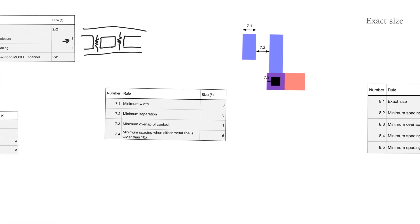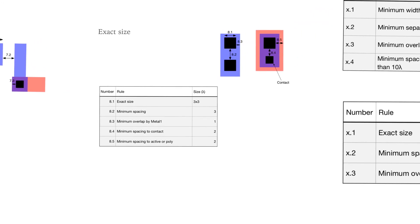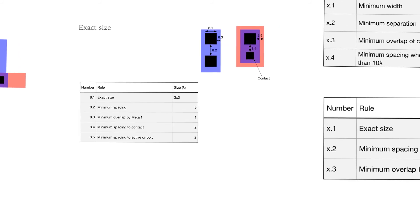The layer just above is metal 1, layer number 7. It has a minimum width of 3 lambda and a minimum separation of 3 lambda. When it has a contact to poly or active, it also must overlap the contact by at least 1 lambda. From metal 1 to metal 2 we have vias, which also have an exact size of 3 lambda by 3 lambda. They have a separation of 3 lambda and must be overlapped by the metal contacting them by 1 lambda. A contact and a via in the same metal track must be separated by at least 2 lambda, and the via must be at least 2 lambda from any polysilicon track.